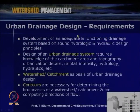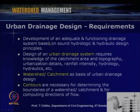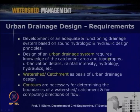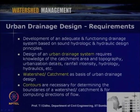Whenever we design an urban drainage system, we must meet certain requirements. Development of an adequate drainage system should be based on sound hydrologic and hydraulic design principles. Design requires knowledge of catchment area and topography, urbanization details, rainfall intensity, hydrology, and hydraulics. It is always better to use watershed or catchment as the basis for urban drainage design. Contour maps help determine watershed boundaries and flow directions, and a digital elevation model indicates flow directions and flood impacts on the watershed.